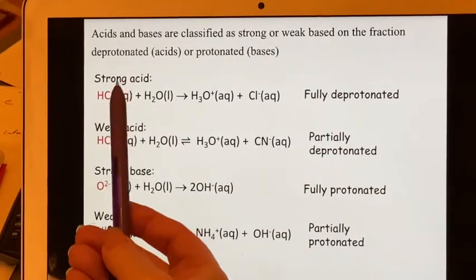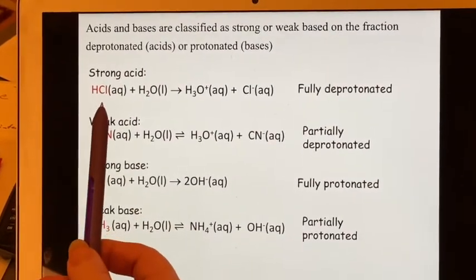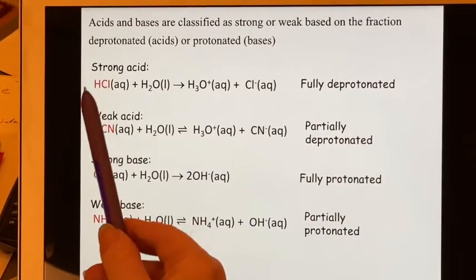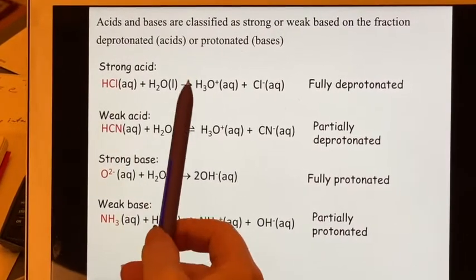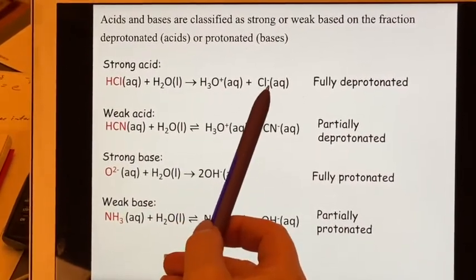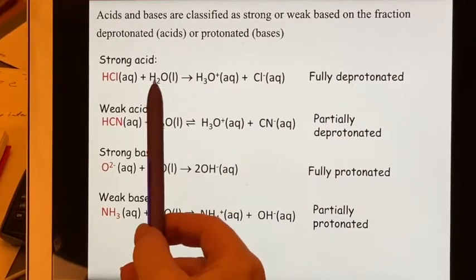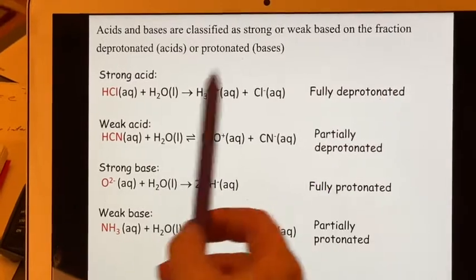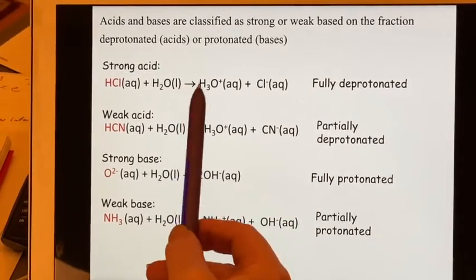So a strong acid like hydrochloric acid will fully deprotonate. Every one of these HCls will end up as a Cl minus and the H plus will go join the water to form the hydronium ion. Fully deprotonated, one-way trip. See, this is a one-way arrow.